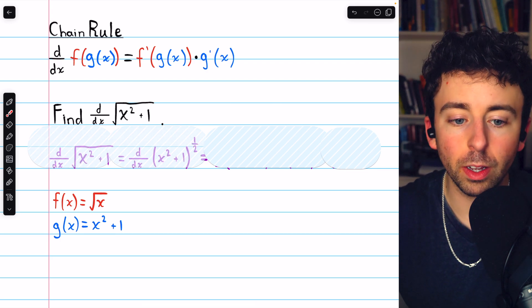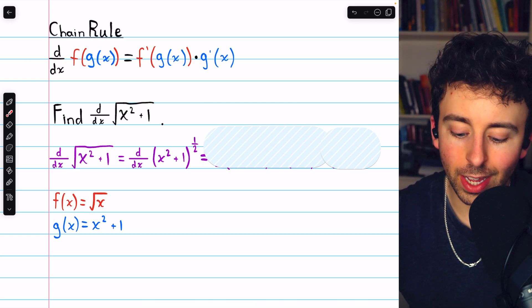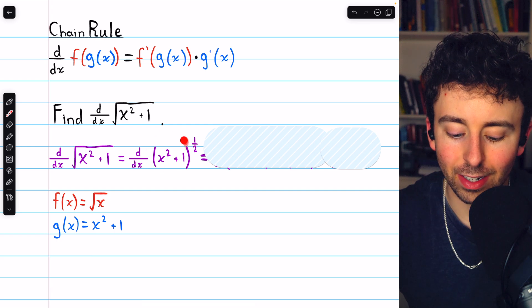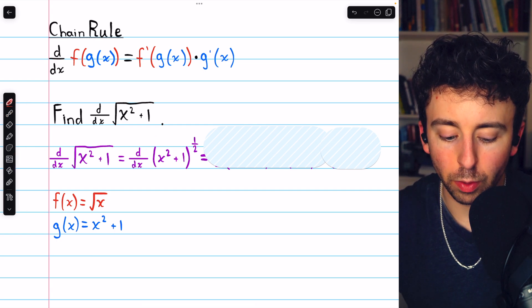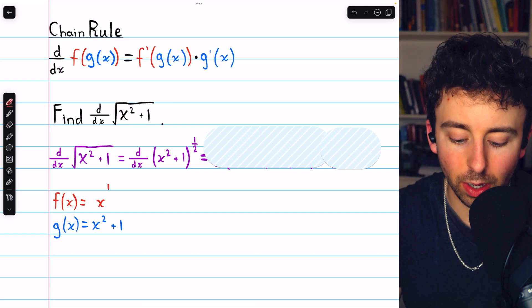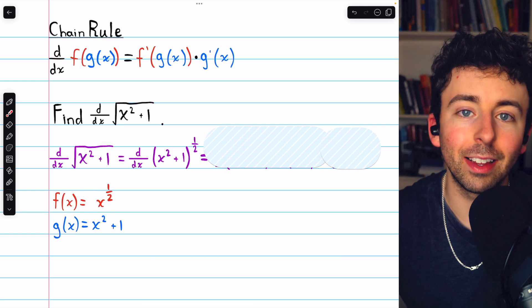All right, let's go ahead and apply the chain rule. Before we begin, we might as well rewrite the square root of x squared plus 1 as x squared plus 1 to the 1 half, and that's what we're taking the derivative of. Just like we could rewrite the square root of x as our outside function, we could rewrite that as x to the 1 half. It's just easier to take the derivative when we write it as a power.